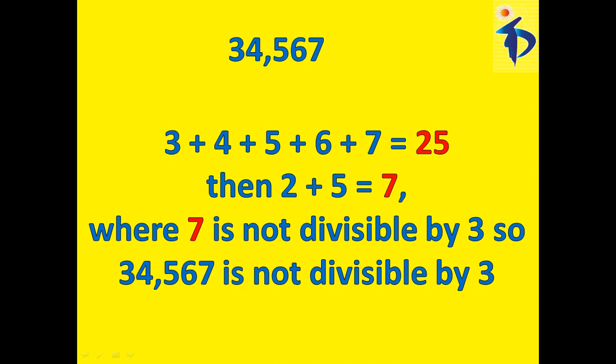Let's check it now. It is the number 34,567. So the digits consist of 3, 4, 5, 6, 7. Now what is the sum of these digits? Here you get that it is 25.